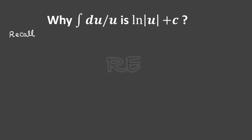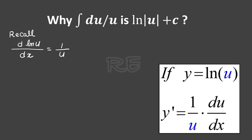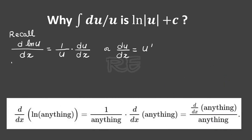You need to recall that the derivative of ln(U) with respect to X — ln(U) being a composite function — is equal to, according to differentiation rules, one over U multiplied by du/dx. Now du/dx is actually U prime, the derivative of the inner function. So the derivative of ln(U) with respect to X is equal to U prime over U.